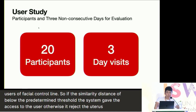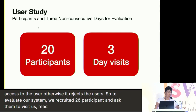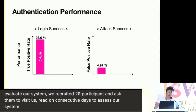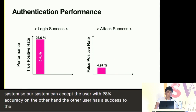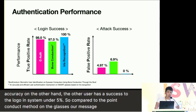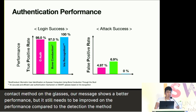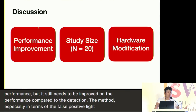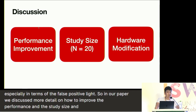To evaluate our system, we recruited 20 participants and asked them to visit on three non-consecutive days. Our system can accept the correct user with 98% accuracy, while other users succeed in logging in under 5% of the time. Compared to the bone conduction method on glasses, our method shows better performance, but it still needs improvement in false positive rate compared to the iris detection method. Our paper discusses in more detail how to improve performance, study size, and hardware modification.